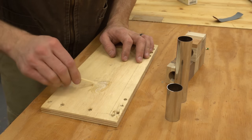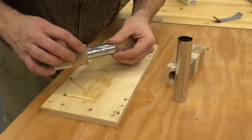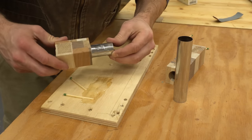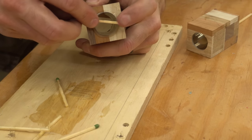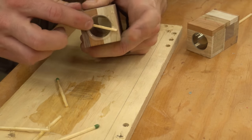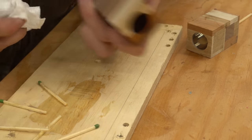I mixed up a small batch of 30 minute epoxy and spread it as evenly as I could over the tube. Then I pushed the tube into the blank, turning it the whole time to make sure everything was well coated. After making sure that the tube was just inside the blank on both ends, I cleaned up any extra epoxy that spilled out and made sure there wasn't any on the inside of the tube.